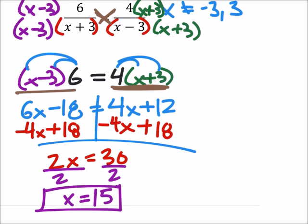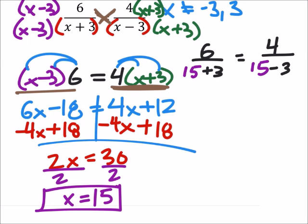All right, the last thing we should do on this problem is to check. So I've got 6 over x is 15. And that would be plus 3. This should equal 4 over 15. Minus 3.